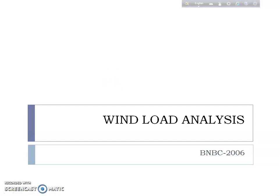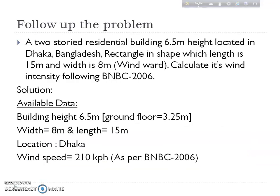Hello viewers, Assalamu Alaikum. Today we will discuss wind load analysis with reference to BNBC 2006 for a building structure. The problem involves a two-story residential building with a total height of 6.5 meters, located in Dhaka, Bangladesh. It is rectangular in shape with a length of 15 meters and width of 8 meters. The windward direction has a length of 8 meters.